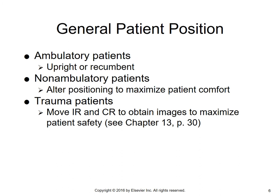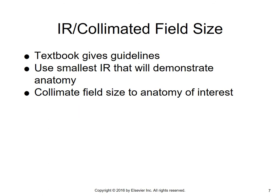For general patient positioning, ambulatory patients can be done upright or recumbent. For non-ambulatory patients, alter your position to maximize patient comfort. In a trauma situation, move the image receptor and central ray to obtain images to maximize patient safety. Use the smallest IR that will demonstrate the anatomy and collimate the field size to the anatomy of interest.